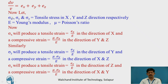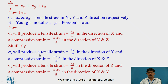Let sigma x, sigma y, and sigma z be tensile stresses in x, y, and z directions respectively, E is Young's modulus, and mu is Poisson's ratio. Sigma x will produce a tensile strain sigma x/E in the x direction and a compressive strain mu·sigma x/E in the y and z directions. Similarly, sigma y produces tensile strain sigma y/E in the y direction and compressive strain mu·sigma y/E in x and z. Sigma z produces tensile strain sigma z/E in the z direction and compressive strain mu·sigma z/E in x and y.